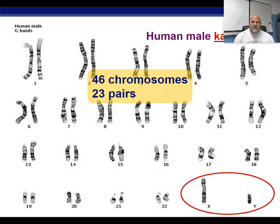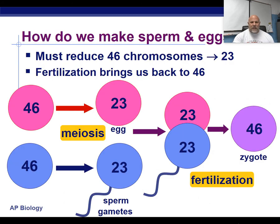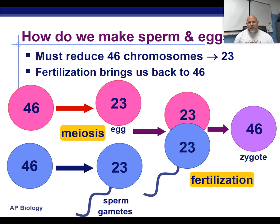If I do all those things, I can create a large amount of variety in my gametes. The number one priority is we have to reduce the number of chromosomes, because if we don't, when fertilization takes place, every generation the number will just keep doubling and doubling. In the next video, we're going to talk about how we reduce that number.